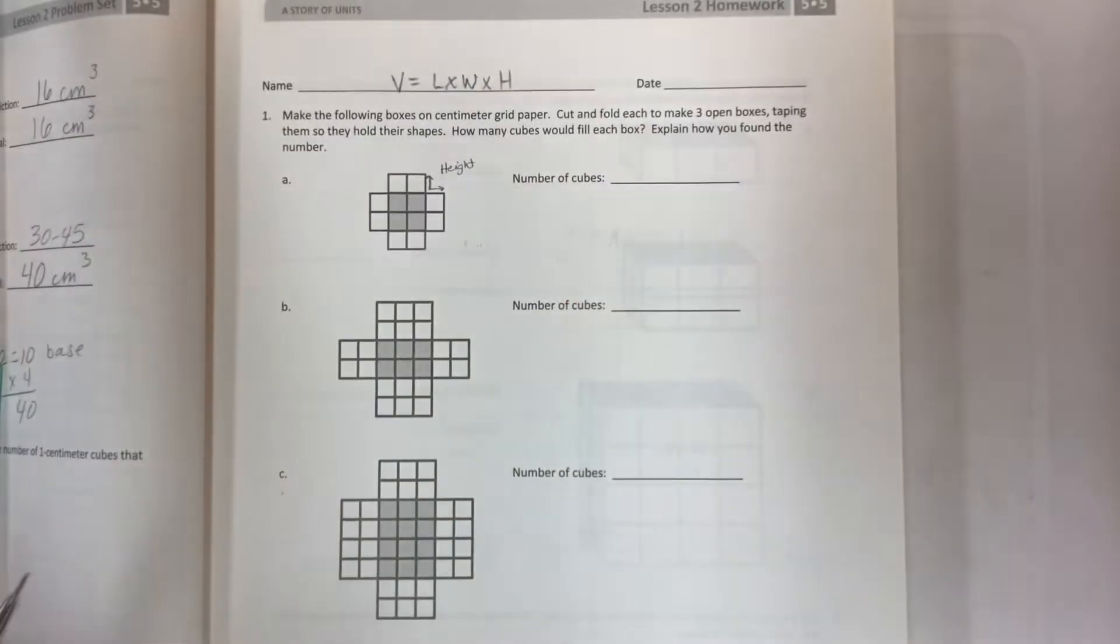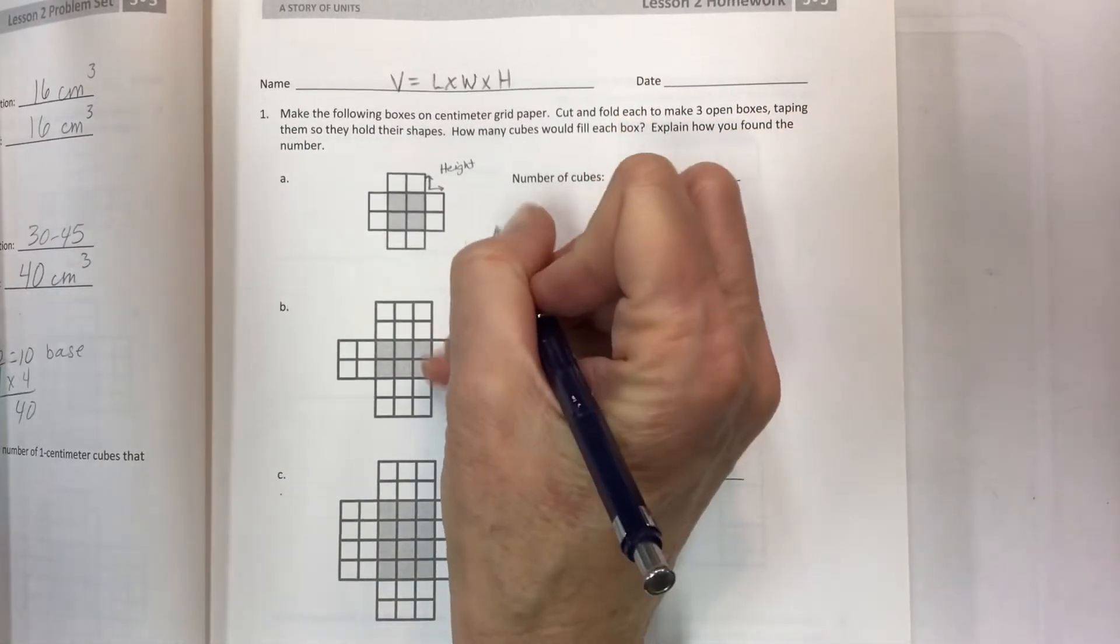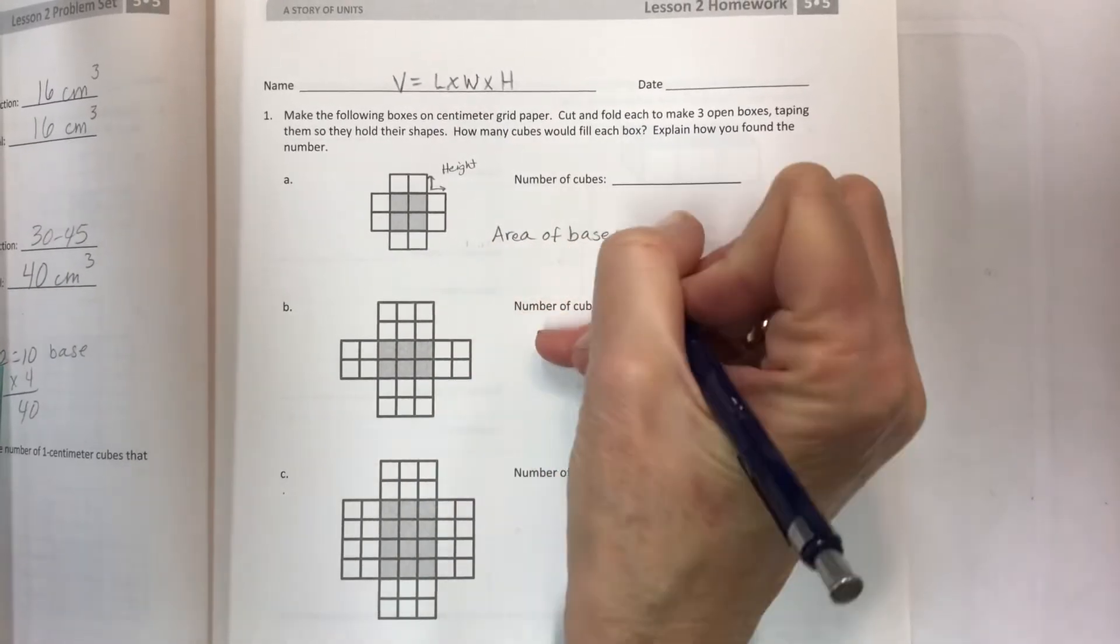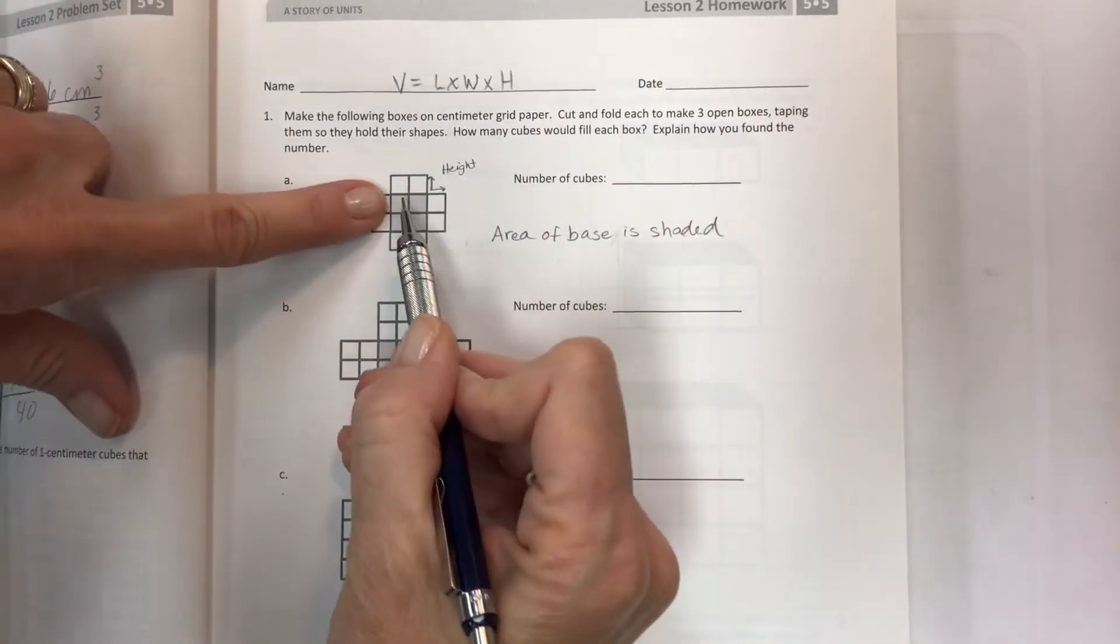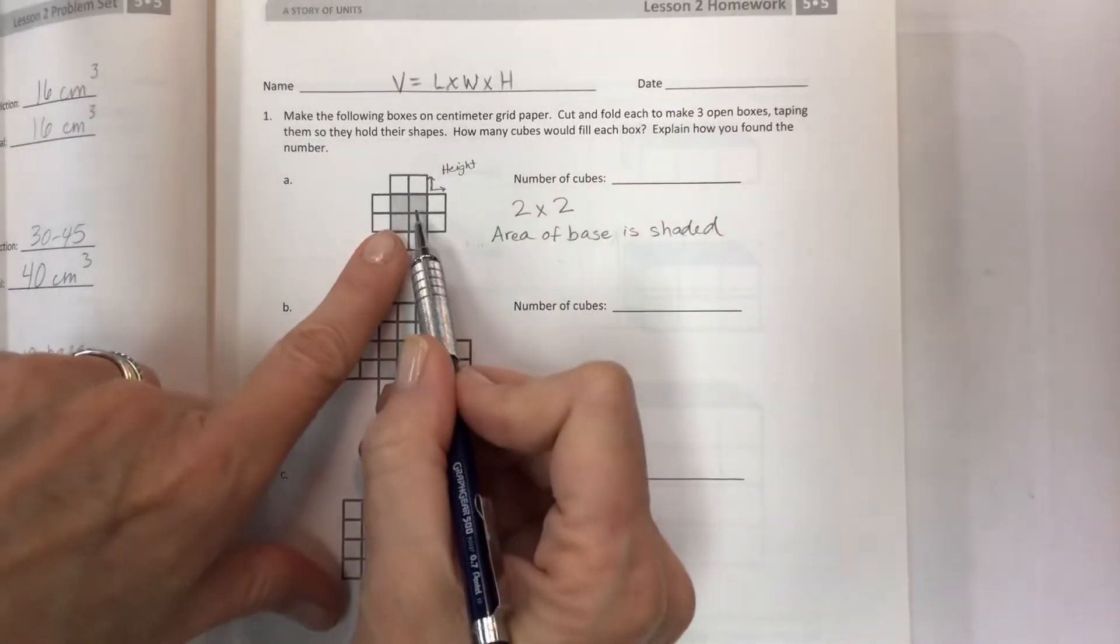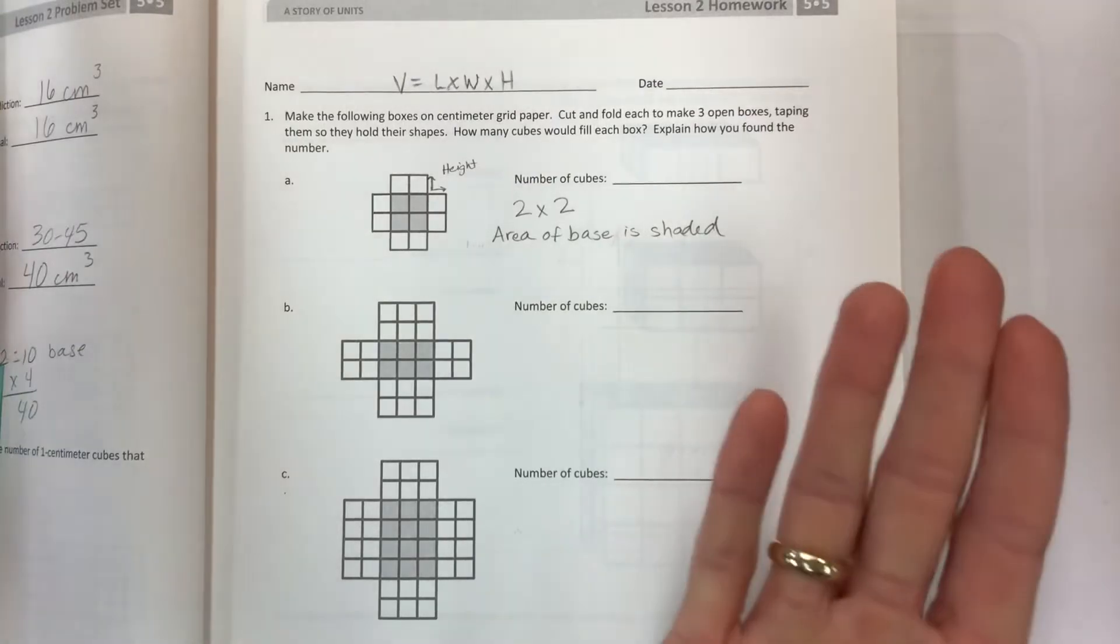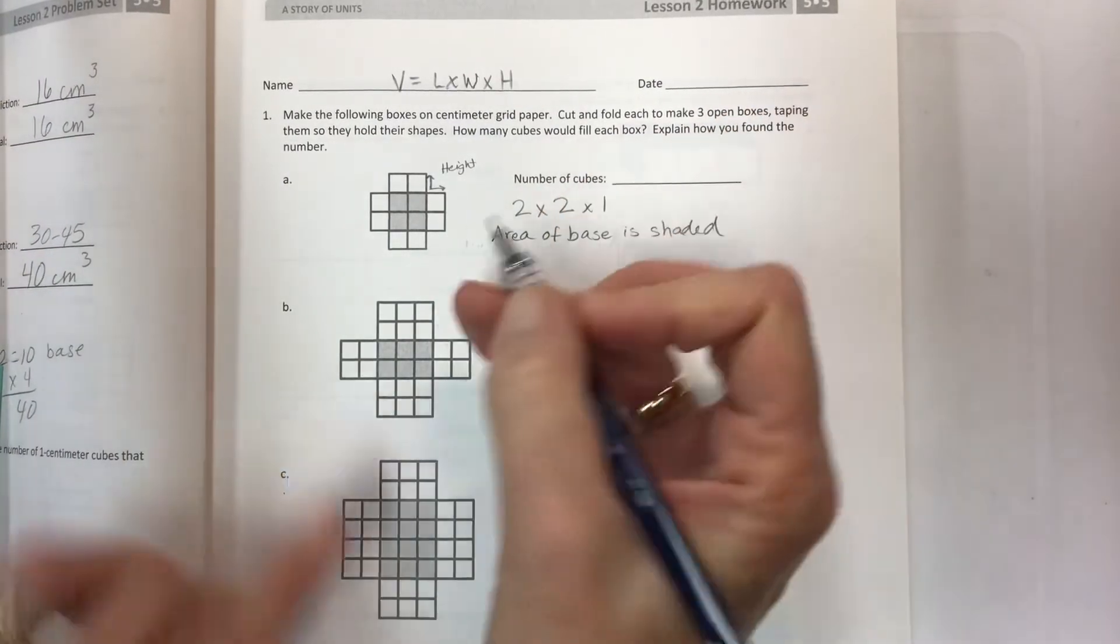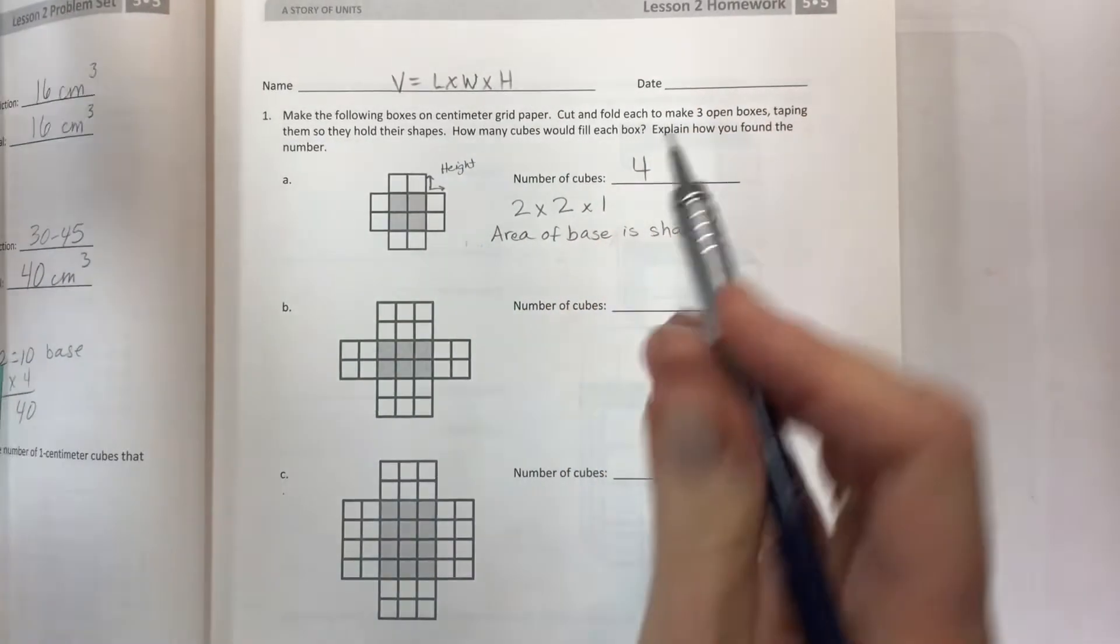How many cubes would fill each box? When you see the area of the base that is shaded, that's going to help you figure out your length times width. This is going to be a 2 by 2, and then the height is that flap side piece. For the first one, it's just one, so 2 by 2 by 1 is 4.